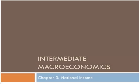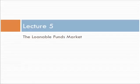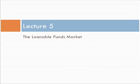Welcome to the last lecture for Chapter 3. In this lecture, we'll be talking about the loanable funds market. That's our last part of our simple model of the macroeconomy — figuring out where does the funding for investment come from. It's essentially going to come from this loanable funds market. We're going to present a very simple loanable funds framework. A more complicated one would be covered in a course like Money and Banking.